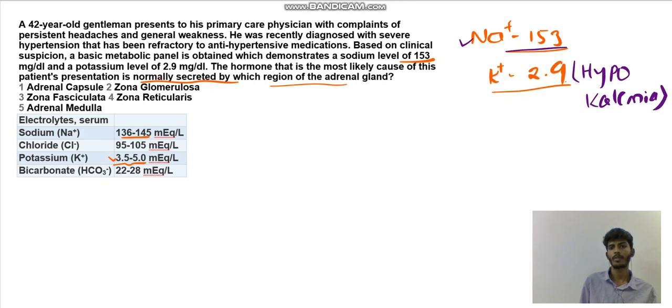Normally sodium is up to 145, so what is the condition here? The patient is having hypernatremia - the sodium level has been increased. So the patient is having hypernatremia with hypokalemia. Which of the following substances will cause this?